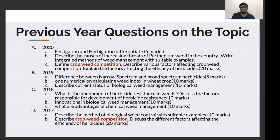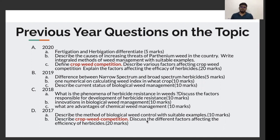Now let's see some previous year questions from weed management on the topics we have just covered. For example, in 2020, the question asked was: 'Define crop weed competition and describe various factors affecting crop weed competition.' This was a 20-marker having three parts. You can see you could have easily scored 15 marks in your 2020 exam just from this 15 minutes of slides — easily 10 to 15 marks.